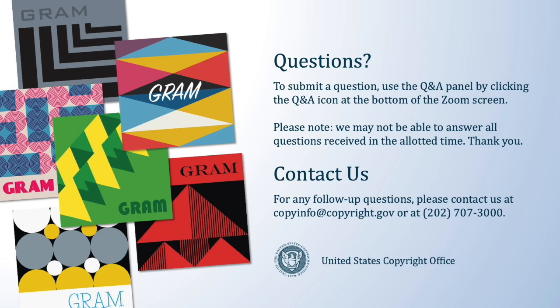Question: I wrote only two of the songs on my album — tracks two and eleven — and the rest of the tracks are covers. Should I list every song title on my application or only the two songs I wrote? You should only list the two songs that you wrote and are the claimant for. You should not list songs that are written and owned by other people that you're not including in the registration. On the title screen, only provide titles for the works that belong to the copyright claimant.